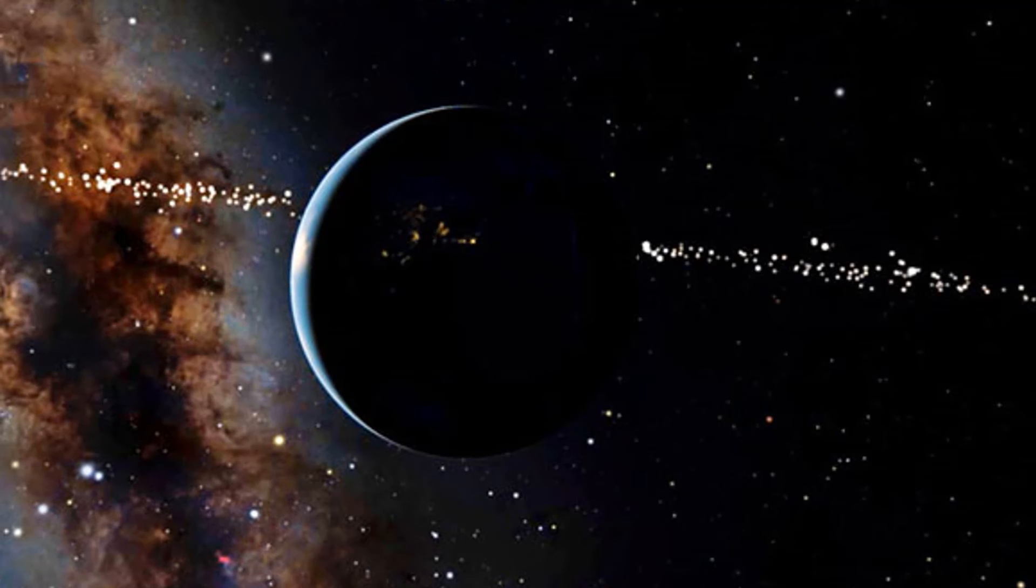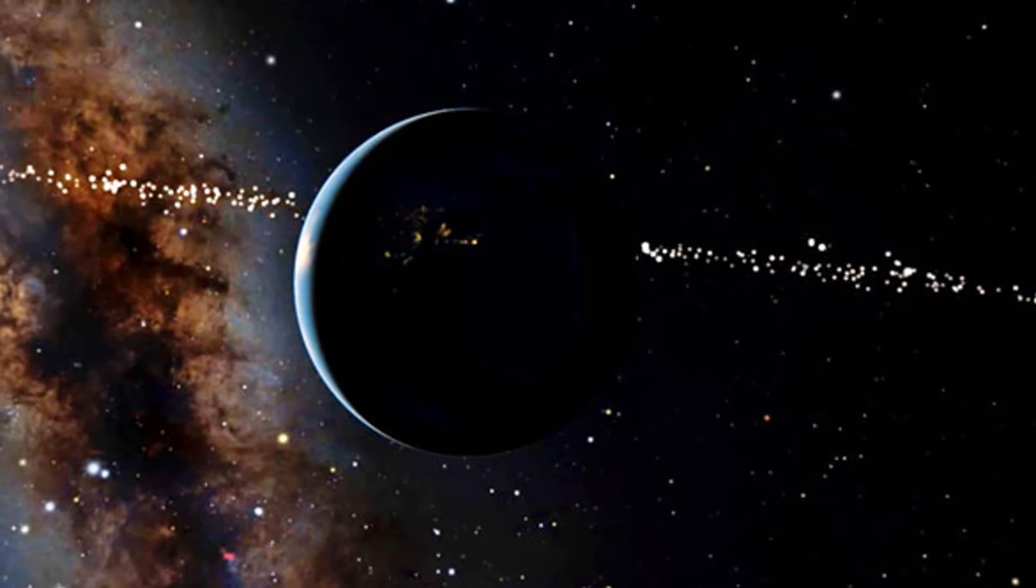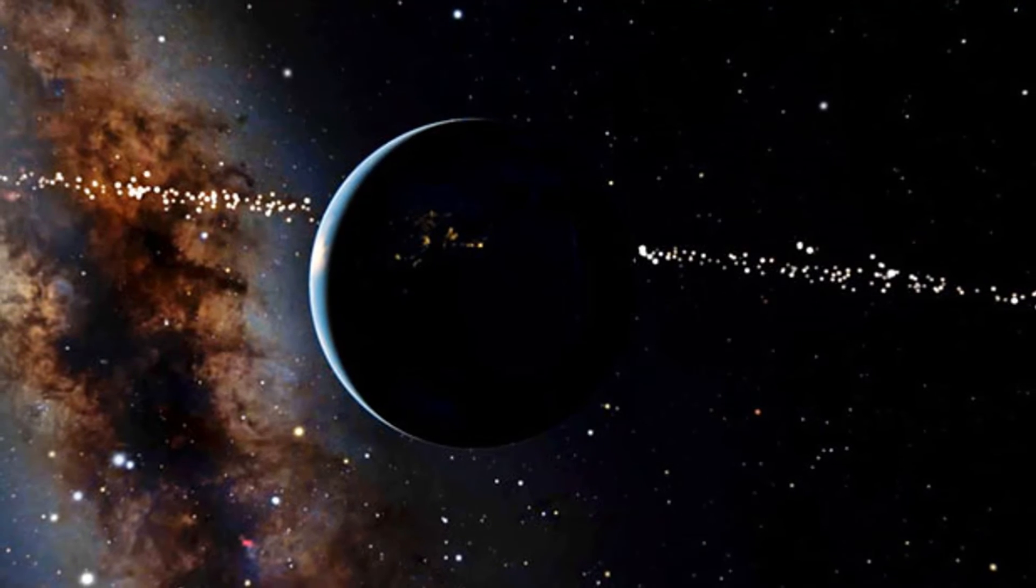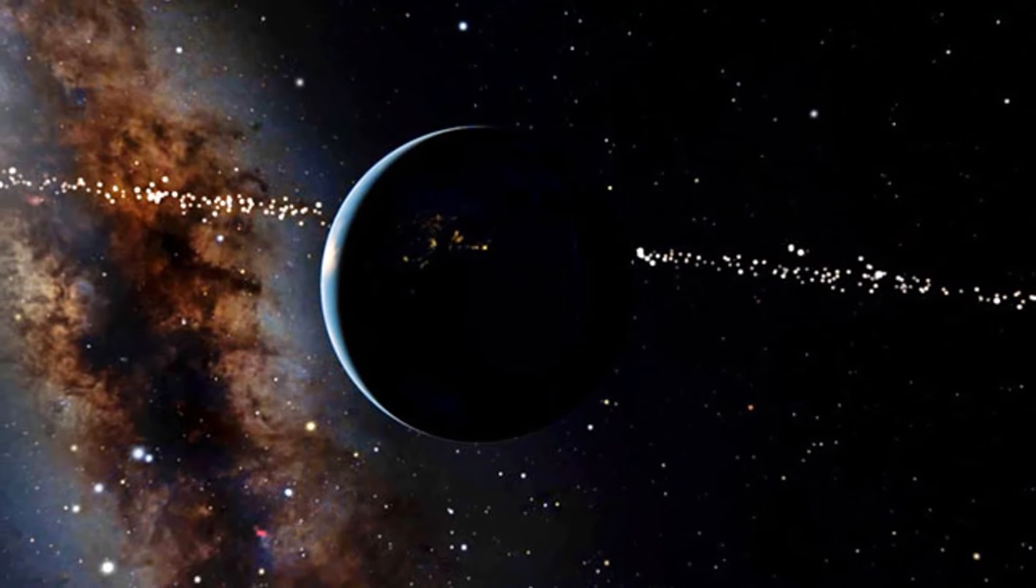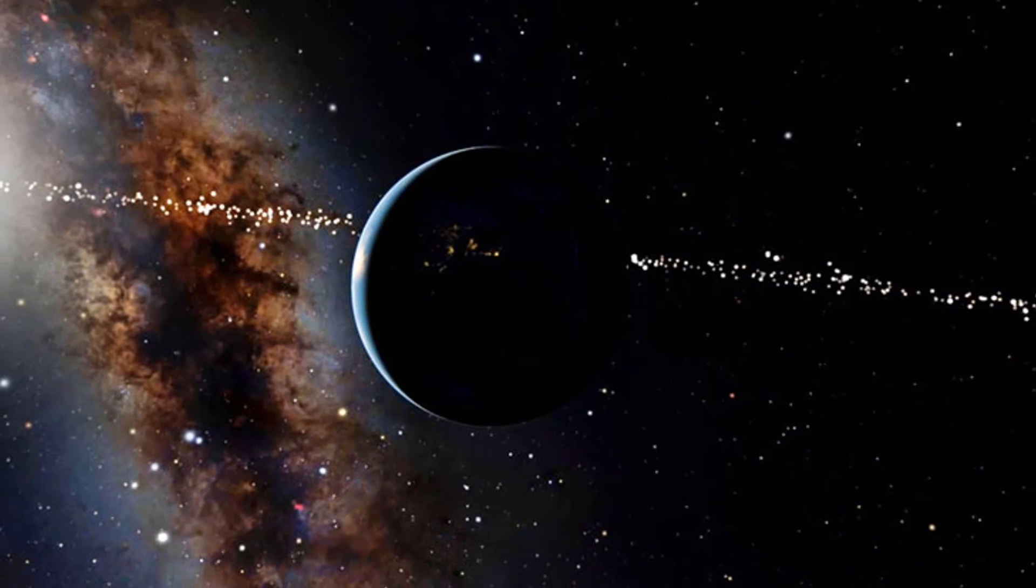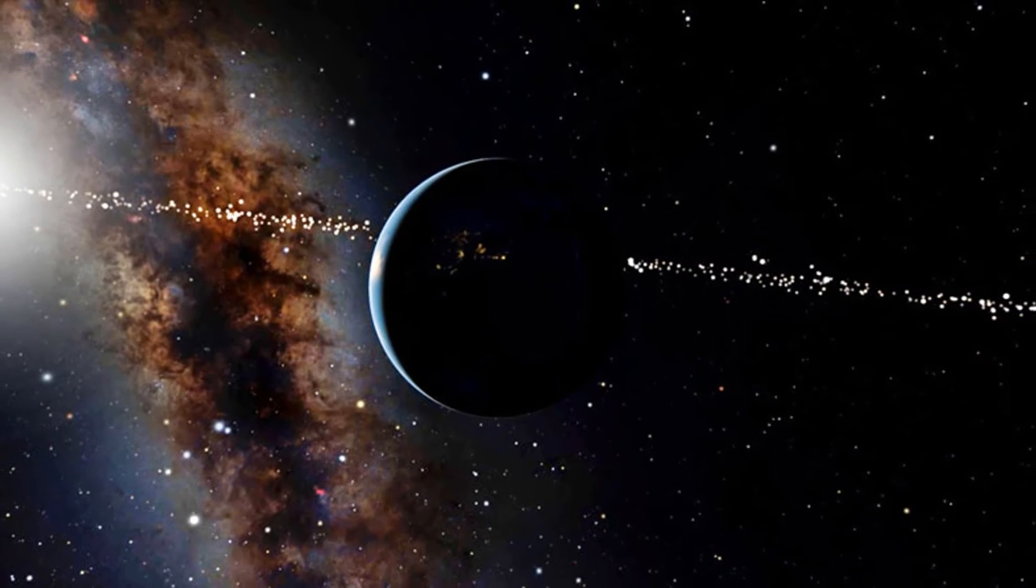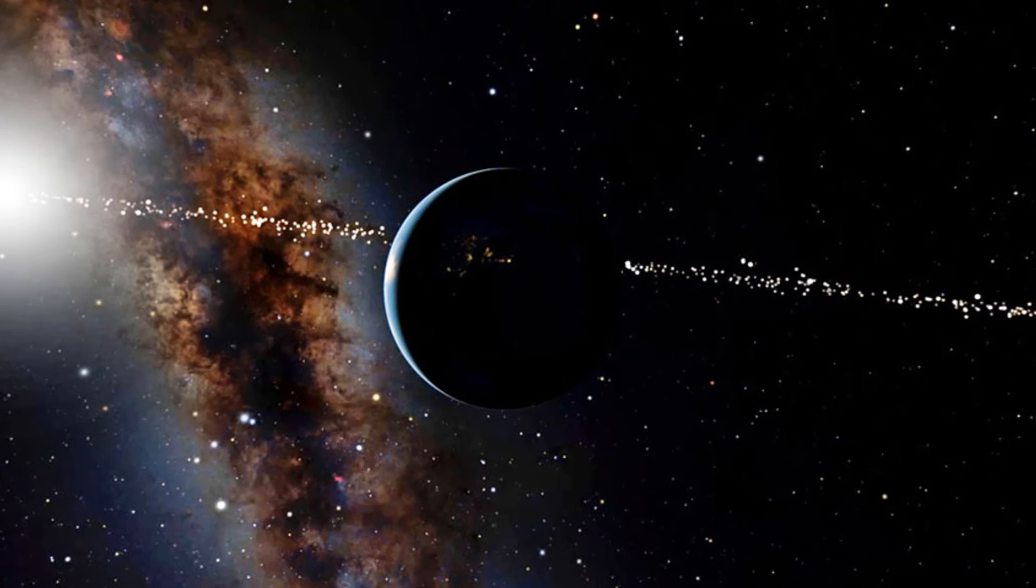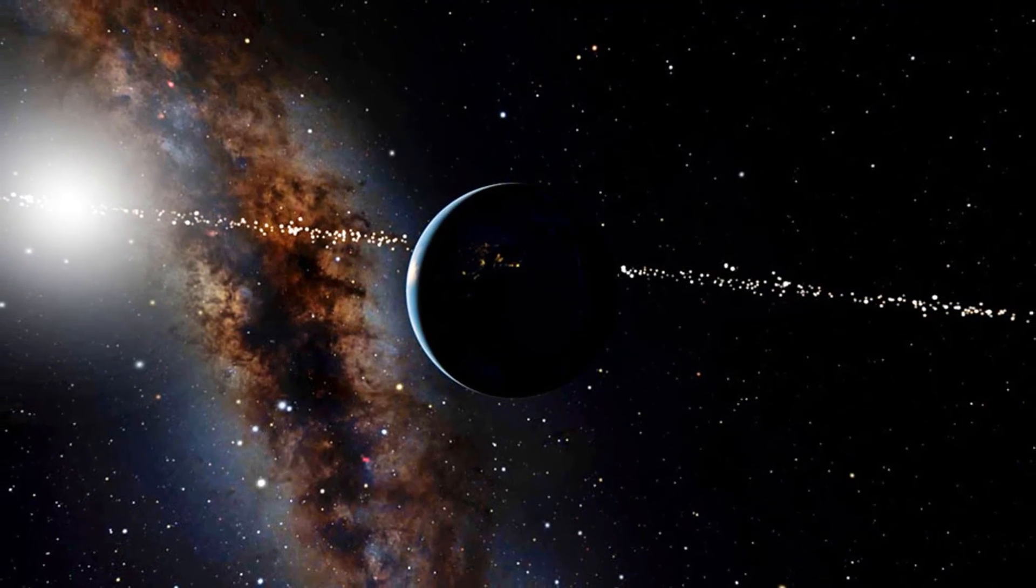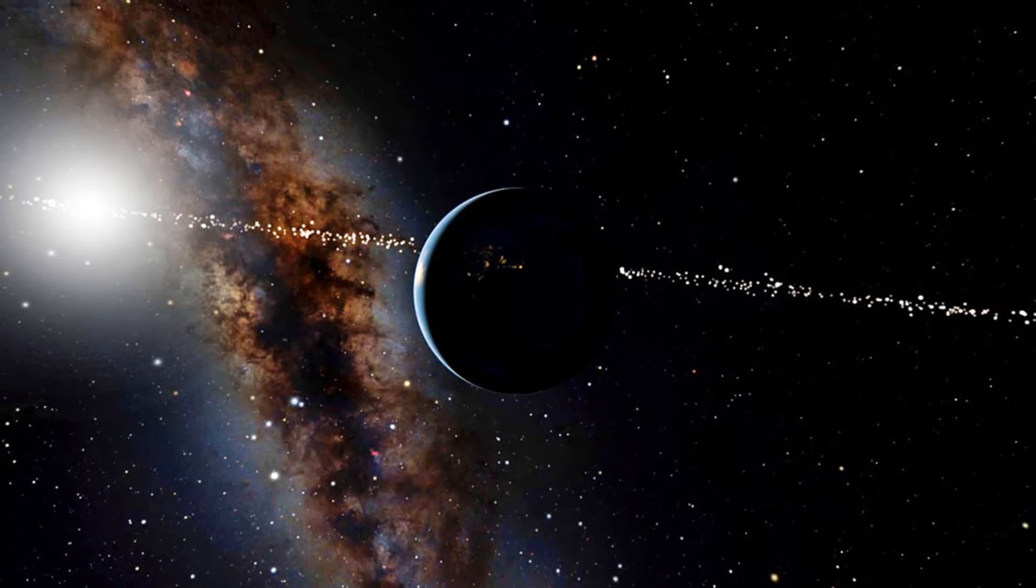But those studies did not take into account stellar movements through space and time. The new work shows that most star systems with a good look at Earth will keep that view for thousands of years. The newly described stellar collection includes some of the nearest and most well-known stars with planets.